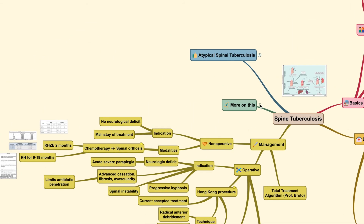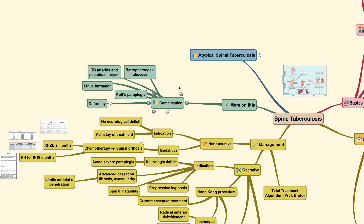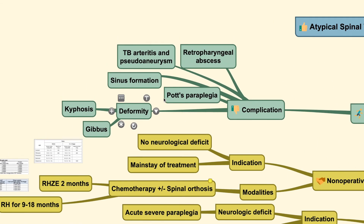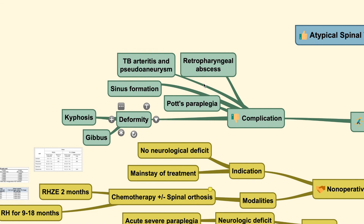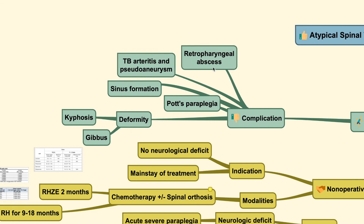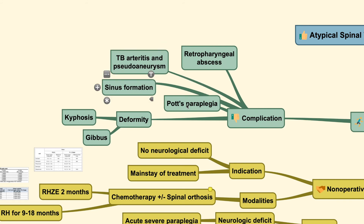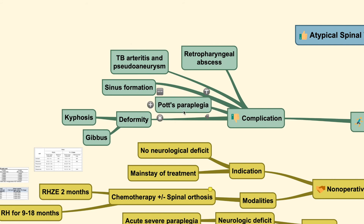Regarding complications of spine tuberculosis, they include the spread of abscess along the retropharyngeal region. It could also develop into TB arthritis, formation of pseudo-aneurysm, post-paraplegia, and sinus formation.